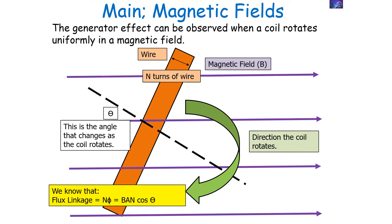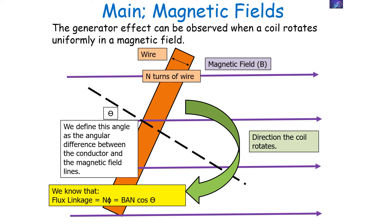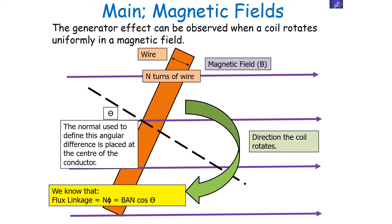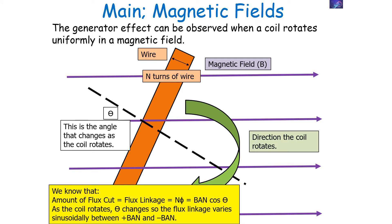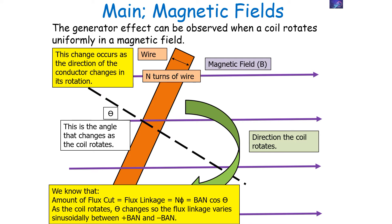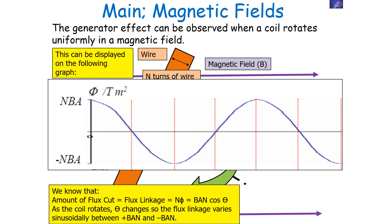The generator effect can be observed when a coil rotates uniformly in a magnetic field. We know flux linkage NΦ equals BANcosθ, where θ is the angular difference between the conductor and the magnetic field lines, defined using the normal at the centre of the conductor. As the coil rotates, θ changes, so the flux linkage varies sinusoidally between plus BAN and minus BAN. This change occurs as the direction of the conductor changes during rotation, and can be displayed graphically — it goes from positive BAN to negative BAN as shown.